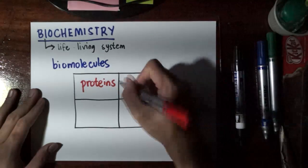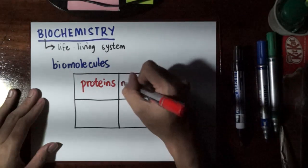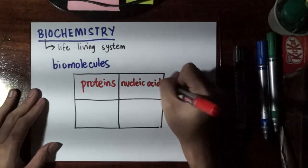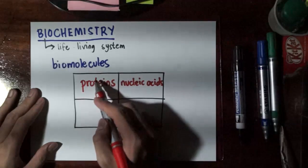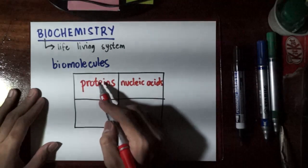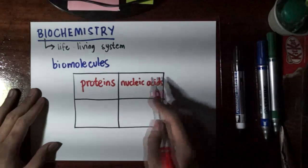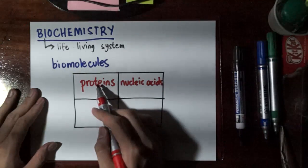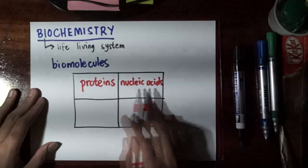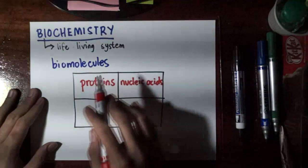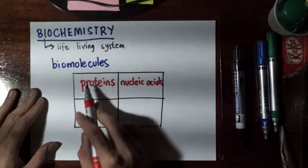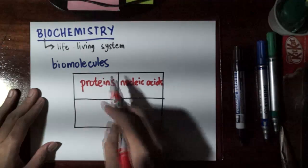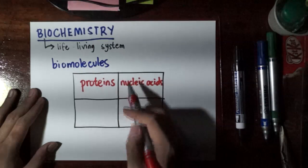And then the next classification or the next set of biomolecules would be nucleic acids. So if proteins are the building blocks of life, nucleic acids are actually the ones that code for the building blocks of life. In short, these are like databases wherein we get what we need in order to produce these proteins. So if this does not exist, we wouldn't be able to produce those compounds which are very important or very vital to our living, or to our function as organisms.